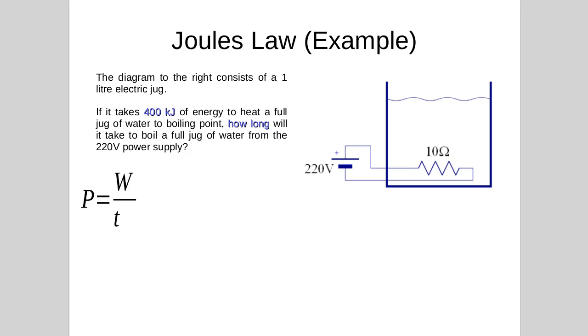So if we take our equation, because we see energy there and we see how long, we recognize that as time. If we take our equation P equals W over T, where W is energy in joules and T is time in seconds, we can rearrange that to put T as our answer. T equals W over P power.